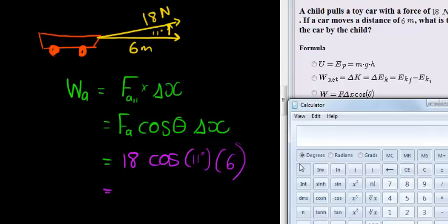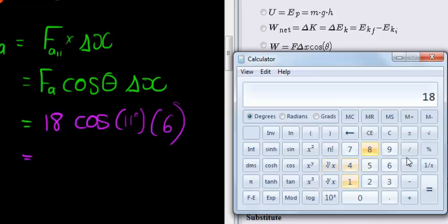And we calculate, and what do we get? We get 18 times cos of 11 times 6, that's it.